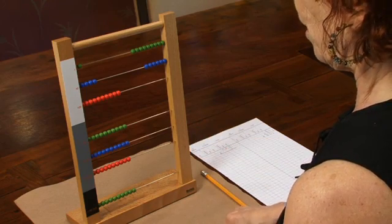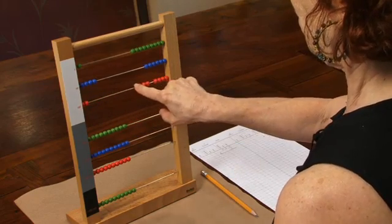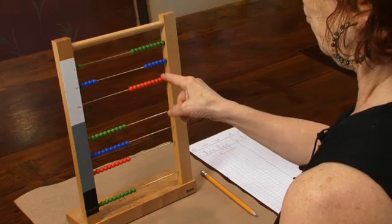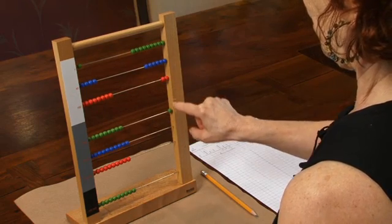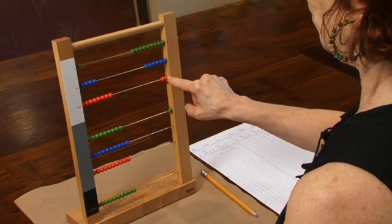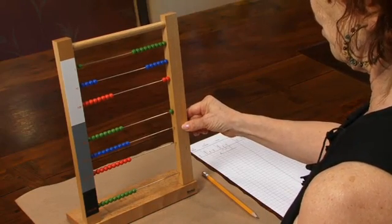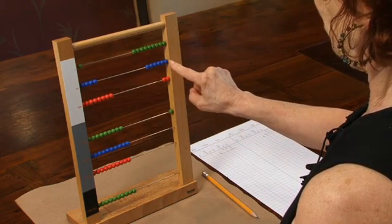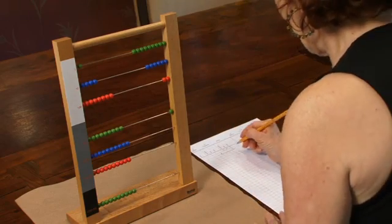Four hundreds taken three times—I have to exchange—is 1,200, which I will record on the bead frame paper.